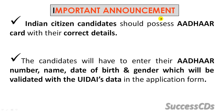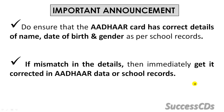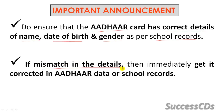Here is an important announcement. All Indian citizens should possess a valid Aadhaar card with correct details. Candidates will have to enter their Aadhaar number, name, date of birth and gender, which will be validated with the UIDAI data in the application form itself. You must ensure that the Aadhaar card has all the correct details of your name, date of birth and gender as per your school records. If a mismatch is there, you should immediately get it corrected in the Aadhaar data and in the school records.